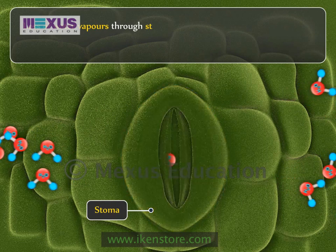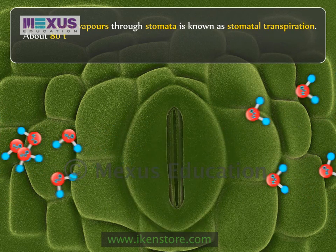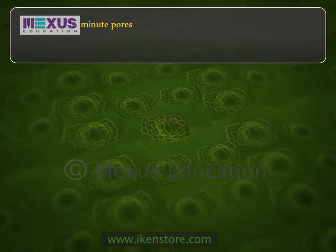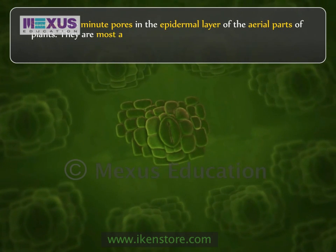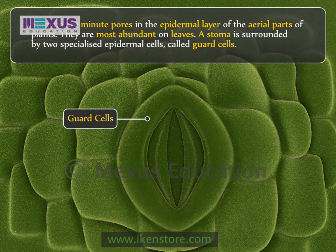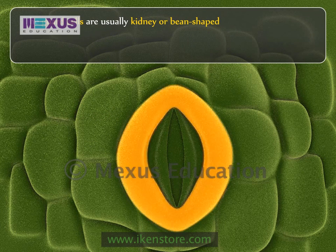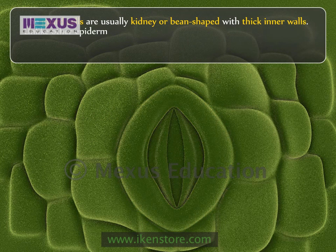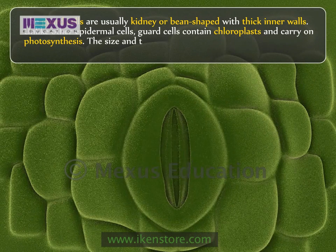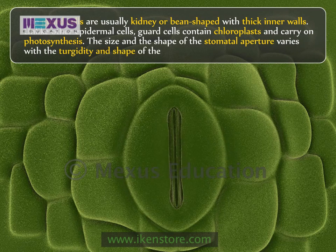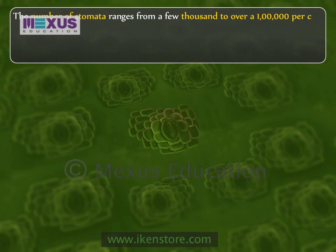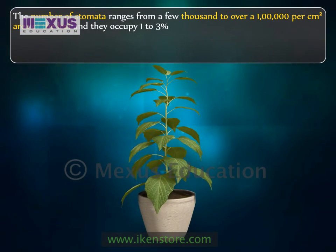Loss of water vapour through the stomata is known as stomatal transpiration. About 80–90% of the total transpiration by the plant occurs through the stomata. Stomata are minute pores in the epidermal layer of the aerial parts of plants. They are most abundant on leaves. A stoma is surrounded by two specialized epidermal cells called guard cells. The guard cells are usually kidney or bean shaped with thick inner walls. The number of stomata ranges from a few thousand to over a hundred thousand per centimeter square area of the leaf, and they occupy 1–3% of the total leaf area.